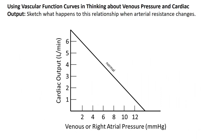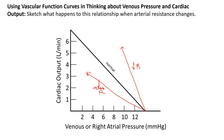Let's do an exercise to make sure we understand this. Without looking back, sketch what happens to this relationship when arterial resistance changes. If we increase resistance, the rate at which venous pressure goes down with cardiac output increases. If we decrease resistance — arterial vascular beds are vasodilated — the curve goes the other way. Vasodilation tends to increase cardiac output; arterial constriction increases resistance and opposes cardiac output.